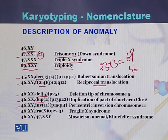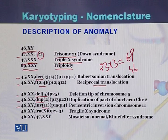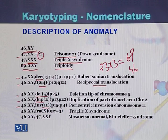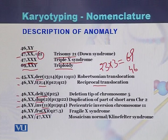46,XYinv is the abbreviation for inversion — there is an inversion on chromosome 11. 46,XYfra means the total number of chromosomes is 46 with X and Y sex chromosomes, but there is a deletion on chromosome X. Due to this deletion on chromosome X, a syndrome is produced in the children called Fragile X syndrome.